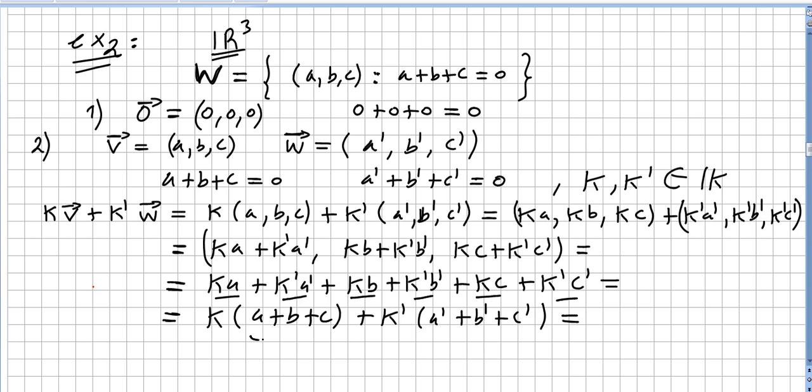But my question is, what is A plus B plus C? Well, A plus B plus C is zero. So we have here K times zero plus K' times zero. So this is zero. So K times V plus K' times W is in the subspace. So W is a subspace of V, or in this case of R³.